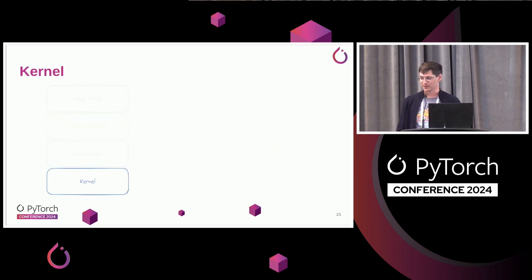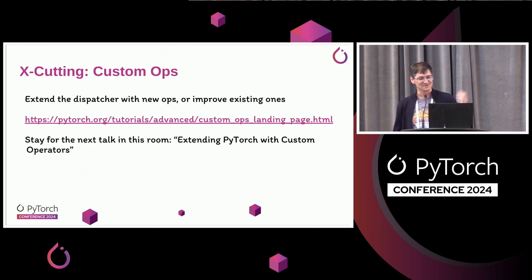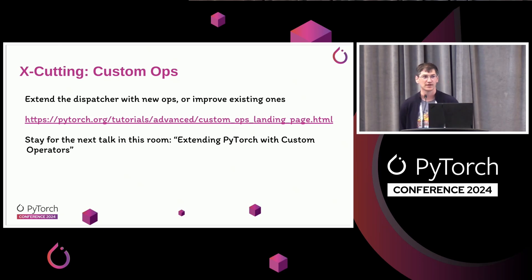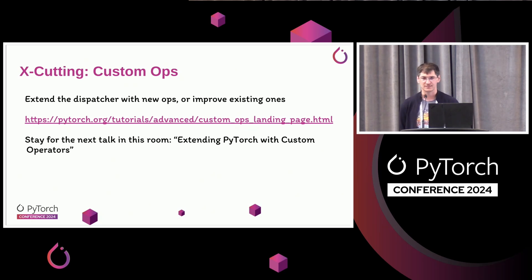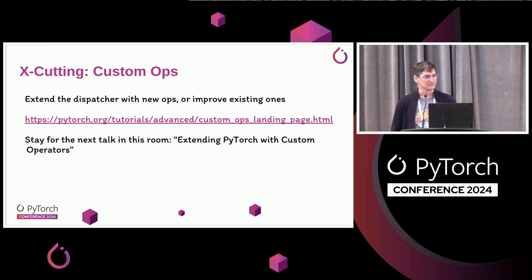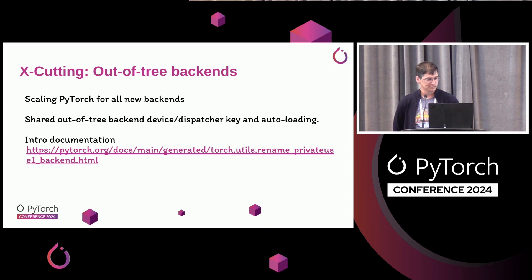Finally, at the very bottom: the kernel — the specific entry in the dispatcher when you actually run code. This is what we call custom ops. Custom ops is all about doing your own entry in that dispatcher system so you can build, without changing PyTorch core code, a new op that does exactly the same behavior as existing ones but with different logic, or you can even improve existing ones. The next talk in this room is actually going to be about extending PyTorch with custom operators by Richard.